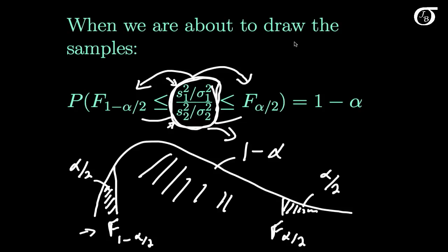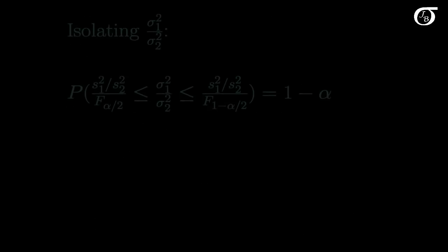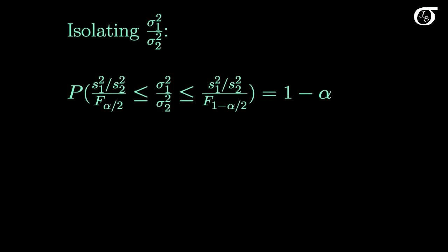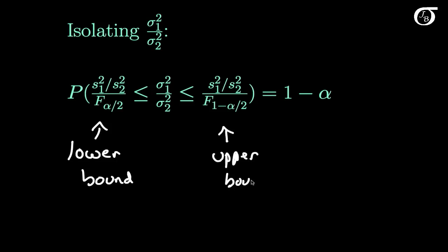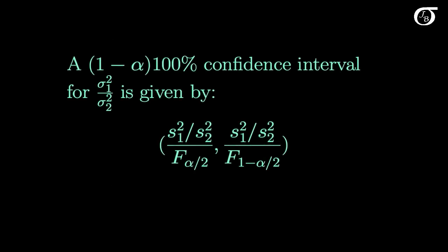Now we're simply going to rework this equation to get sigma 1 squared over sigma 2 squared on its own. And if we do that, this is what we end up with. You can work through the algebra yourself, but this is going to end up being the lower bound of our confidence interval, and this is going to end up being the upper bound of our confidence interval. Bringing all that together, we have our final formula: a 1 minus alpha times 100% confidence interval for the ratio of population variances is given by these two quantities that we derived above.